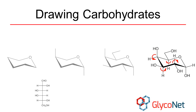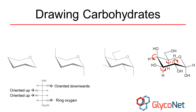To check that your hydroxyl groups are in the right place, pretend that you are walking along the carbon chain starting from C6. When you get to each carbon, always walk between the hydrogen and the oxygen. Hydroxyl groups on the right in the line drawing should also be on the right in the Fischer projection. Also notice that hydroxyl groups on the right-hand side of the Fischer projection end up being oriented downwards in the ring.